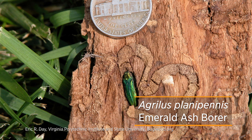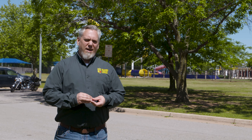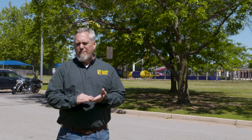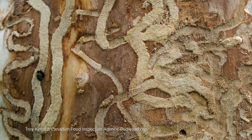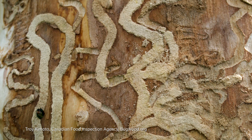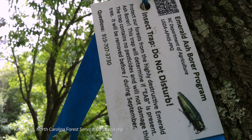The emerald ash borer started up in the Michigan area, and they think that it maybe came over in pallet wood, something to that effect. They're not really sure exactly how it got here, but they know that it got here and they weren't ready for it. Whenever it started hitting the communities up in that part of the country, it caused substantial damage — millions if not billions of dollars in cleanup was required to help fix this problem.